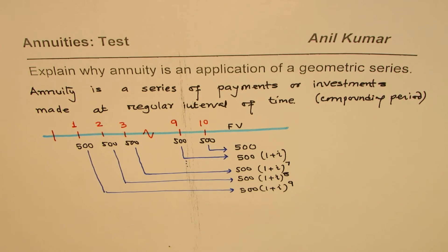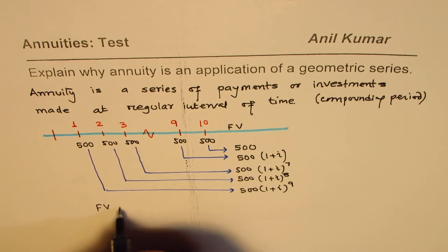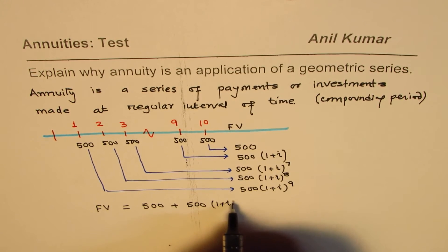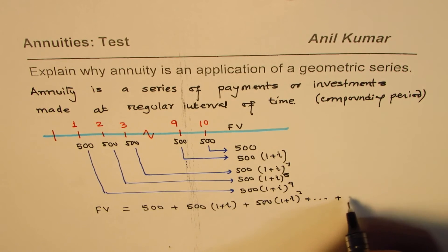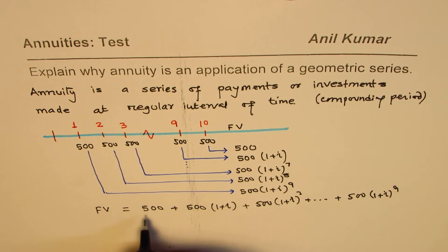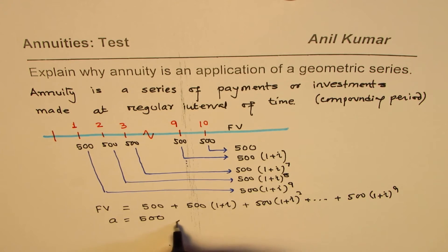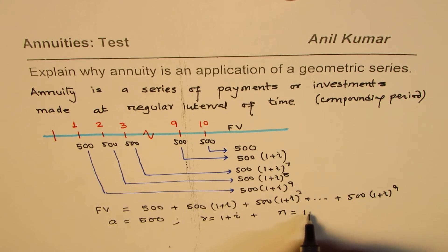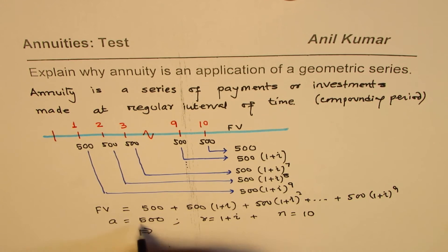So the future value is the sum of all these terms: 500 + 500(1 + i) + 500(1 + i)^2 + ... + 500(1 + i)^9. This is a geometric series where the first term a = 500, the common ratio r = (1 + i), and there are n = 10 terms in total.